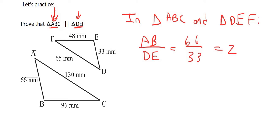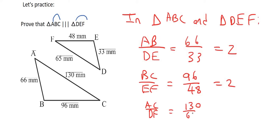Then we can say now we can look at another two letters. So for example we could look at BC and EF. So we could say BC over EF and that would be equal to 96 over 48 which is also equal to 2. Then we could look at another two sides which would be the first one and the last one. So that would be AC over DF and that would be 130 over 65 and that is also equal to 2. So because all three of them are giving us a 2 we can say that these two triangles are similar.